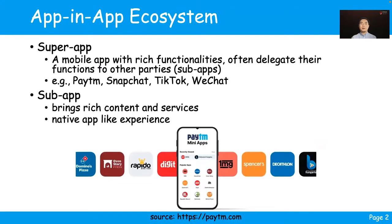Nowadays, mobile applications with rich functions bring significant convenience to people's daily work and life. To better serve existing users and keep attracting new users, these mobile apps become super apps, which means they often delegate some of their functions to other parties with the aim of enriching content and services. These parties with delegated functions are called sub-apps. They behave like native apps, and this popular community is called a mobile app-in-app ecosystem.